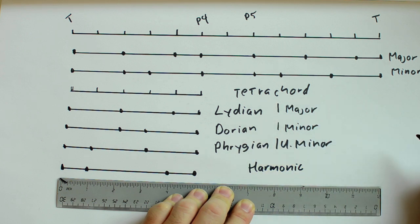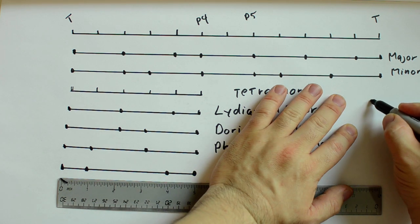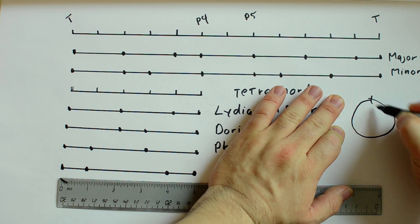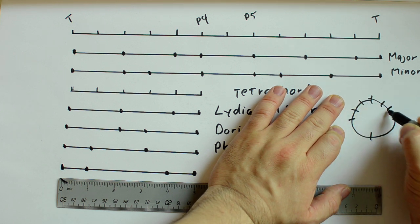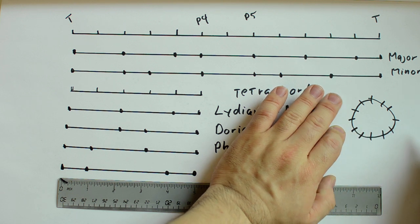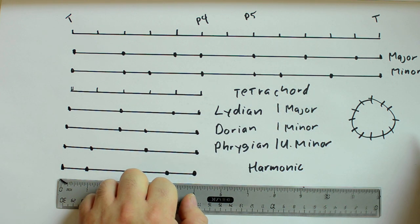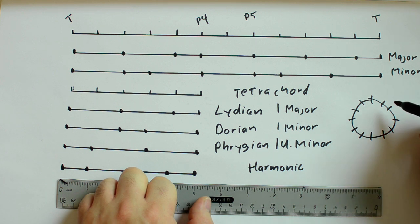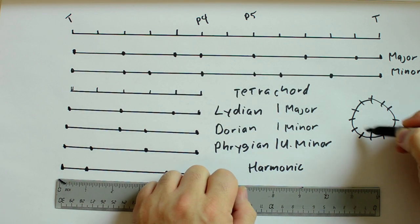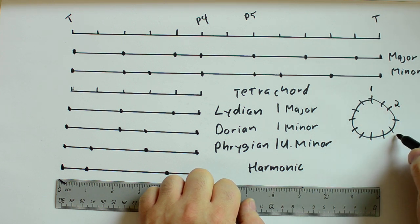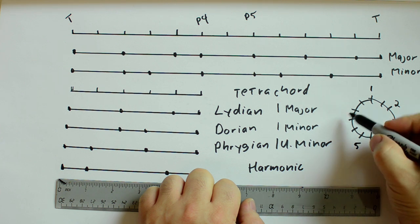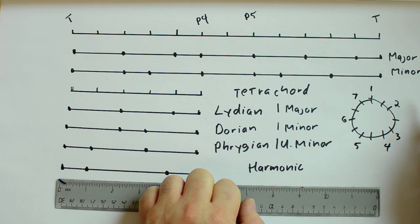Now if I draw a clock — a clock has 12 hours on it — it's another way we can represent the 12 notes of the scale. Instead of a straight line, I'm simply looping it around and drawing a clock. So we can start here on the 12 o'clock position and put 1. This would be 2, this would be the major 3rd, the 4th, the 5th, the 6th, and the major 7th.